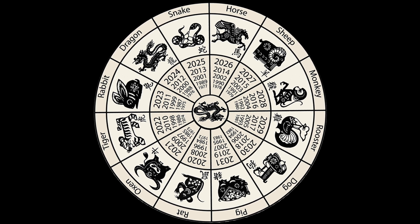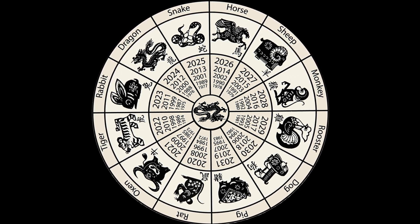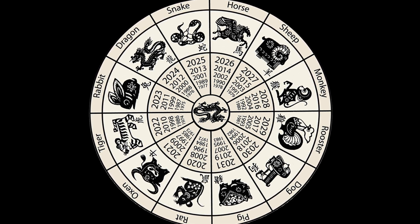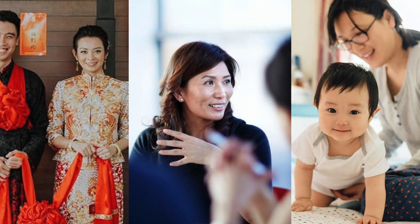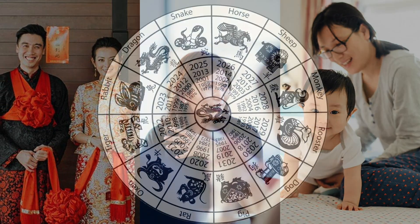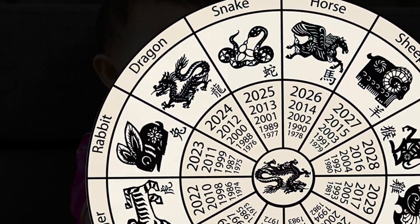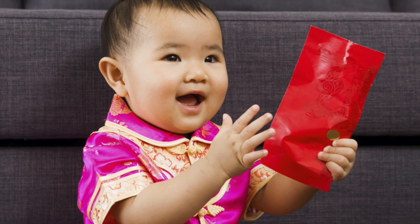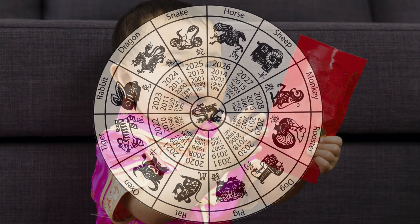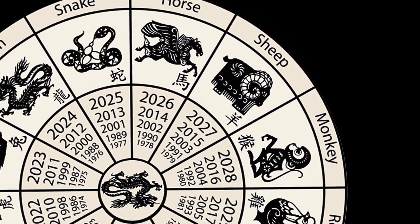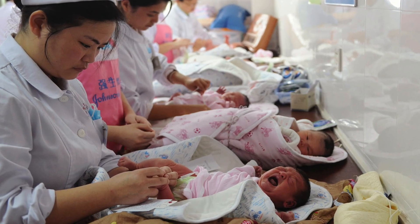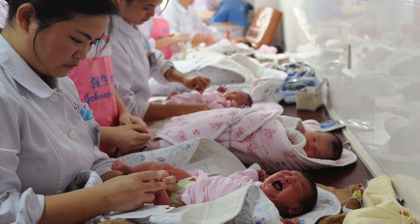The 12 zodiac animals are: rat, ox, tiger, rabbit, dragon, snake, horse, sheep, monkey, rooster, dog, and pig. Certain animals are considered more auspicious than others, and marriages, launching new businesses, and other major life events are often planned around the zodiac calendar. The dragon is considered the luckiest, and those years generally see a spike in the birth rate as many parents want to give their children a cosmic leg up. Conversely, the sheep is seen as less fortunate, and January 2015 saw a surge in C-sections so that children could avoid being born in that unlucky year.